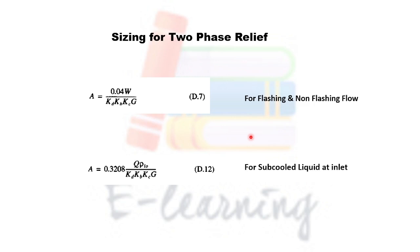If the relieving fluid is two-phase, we have to use different equations. API 520 also provides equations for two-phase fluid. For flashing and non-flashing flow we would use equation D-0.7, and for subcooled liquid at inlet conditions we would use equation D-0.12. All these equations can be found in API 520 Part 1.